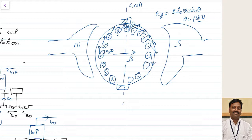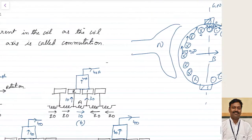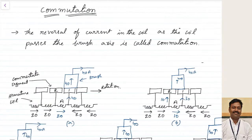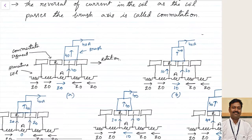Practically, due to the effect of armature reaction and some other effects, this smooth change of the voltage from positive to negative — or the smooth change of the current from one direction to another direction — may not be possible. So the process by which the current changes from one direction to another direction is called commutation.